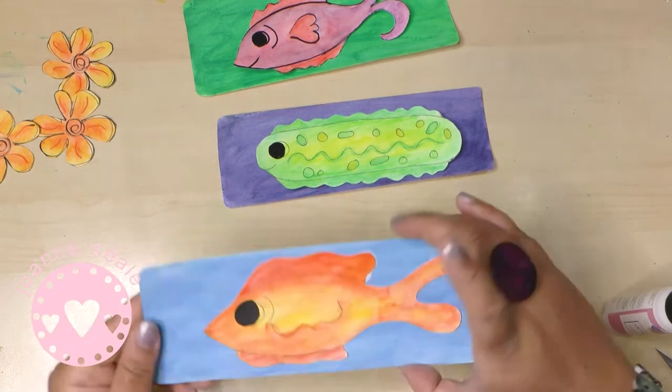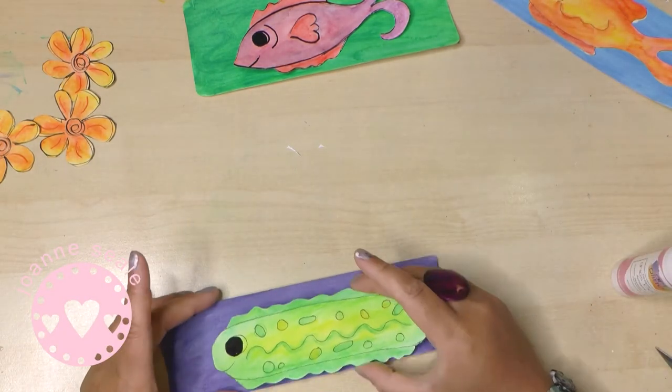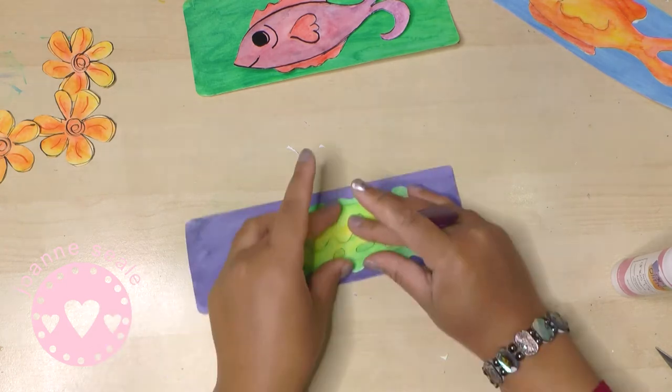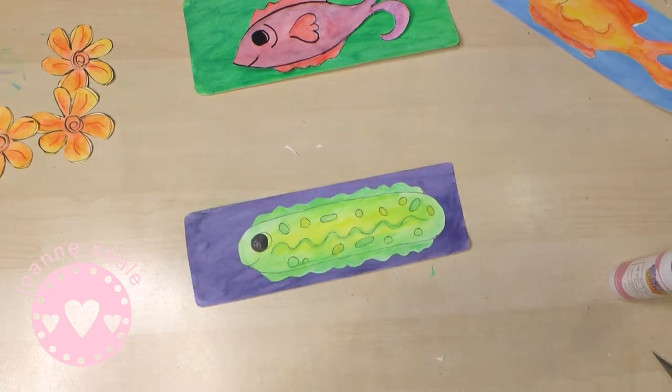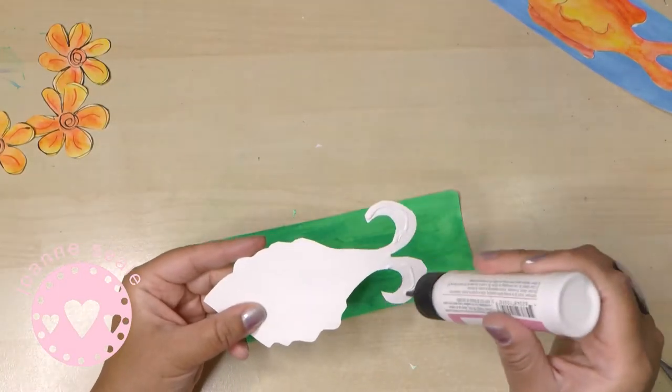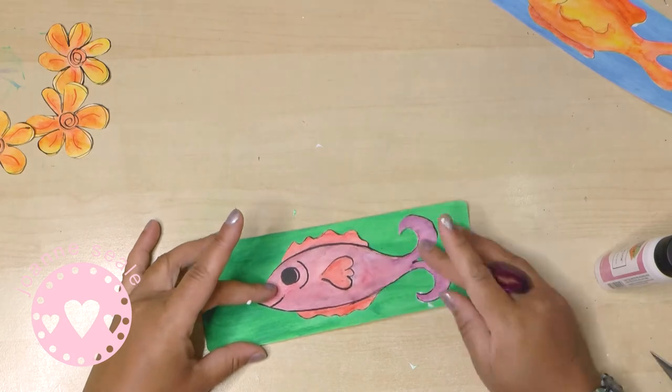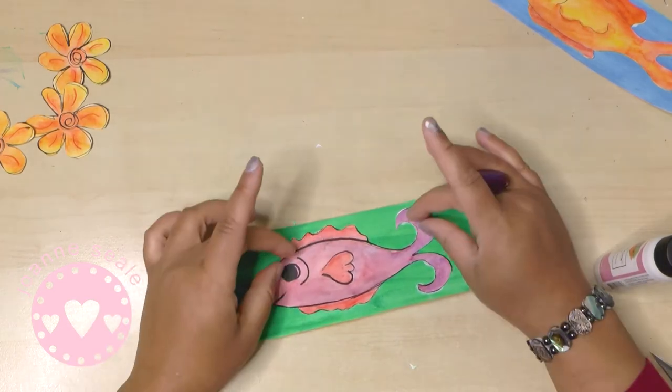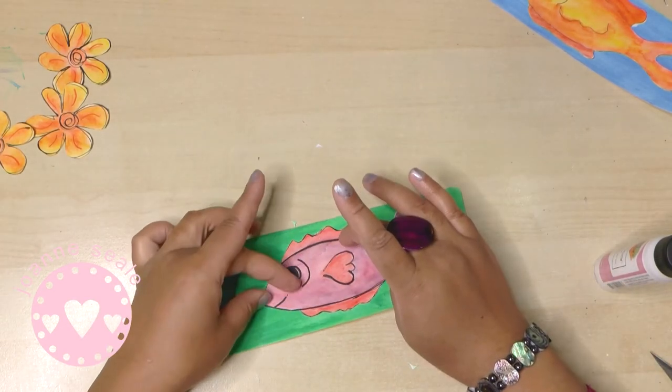So make sure that the fishes are more towards one end because we need to put the flowers on the other end, so there needs to be a little bit of space. So as you can see I've left a bit of a gap on the left hand side.